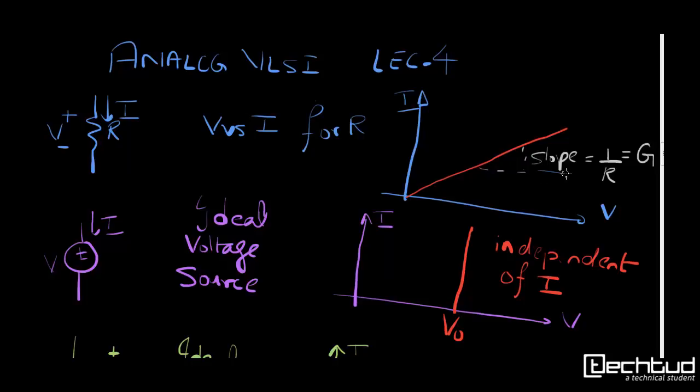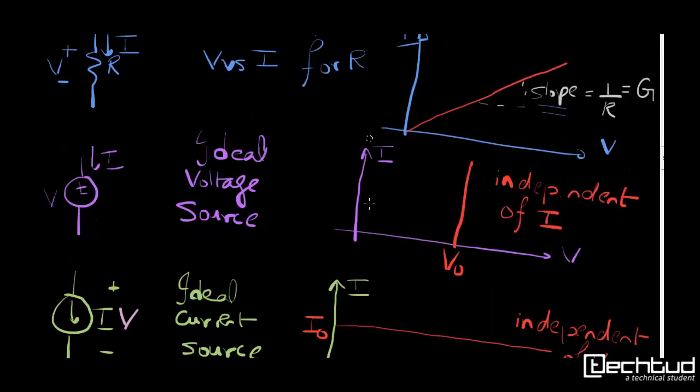Next we see the ideal voltage source. Ideal voltage source means you can draw infinite amount of current with it or zero current. It doesn't matter. Current doesn't matter. Voltage is fixed.